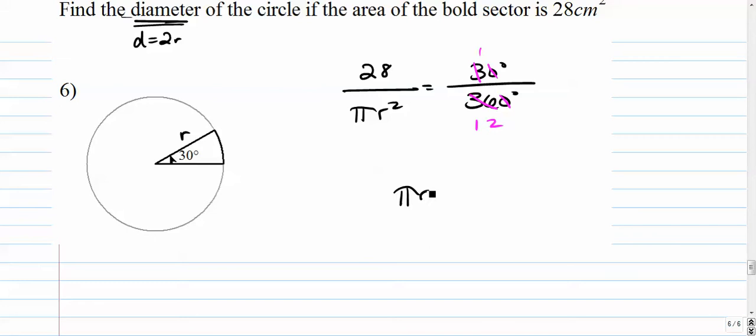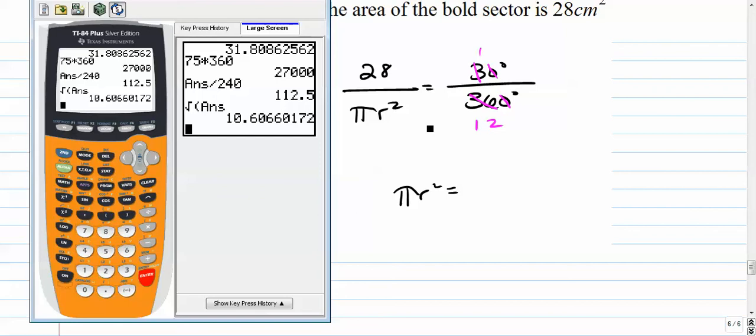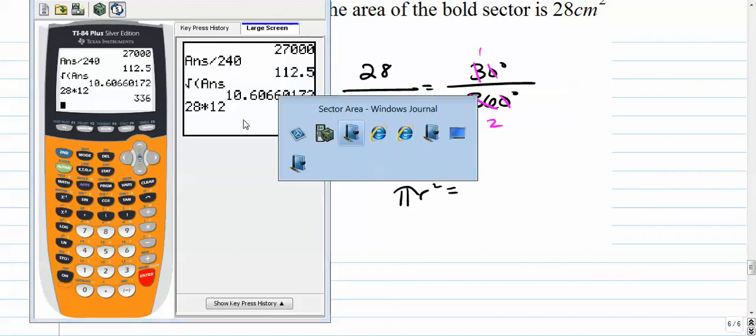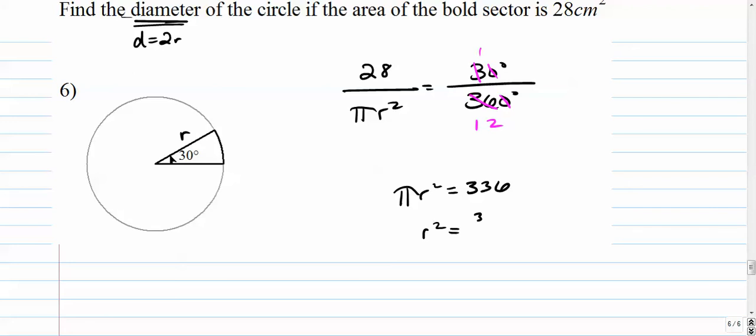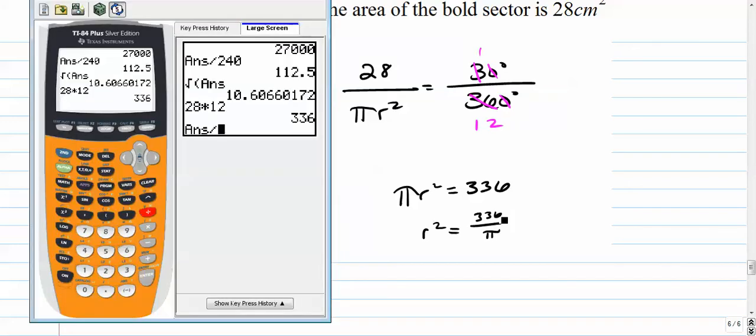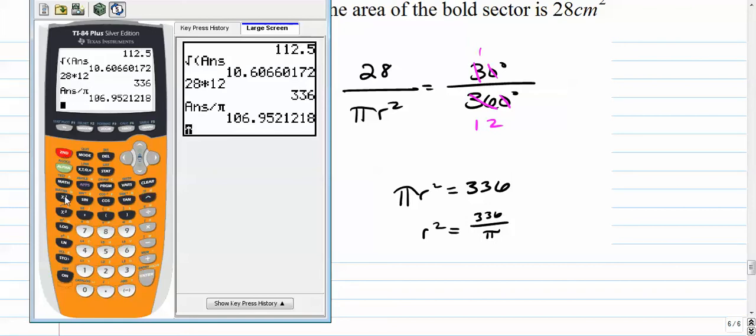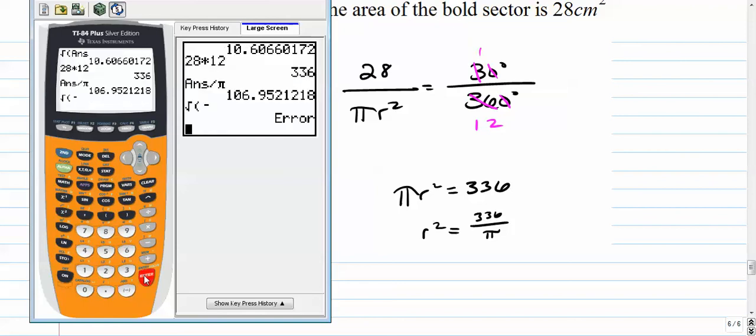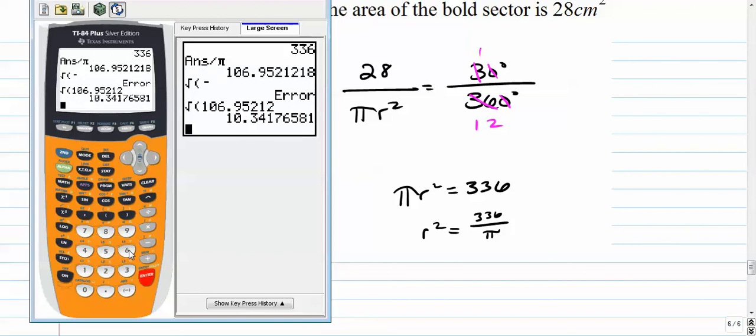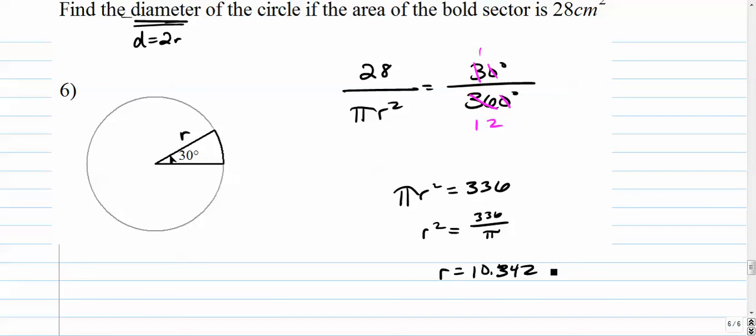Pi r squared times 1 is just pi r squared equals 28 times 12. 28 times 12 should be 336. Divide by pi. So 336 divided by pi. And then square root that. 10.342 centimeters.